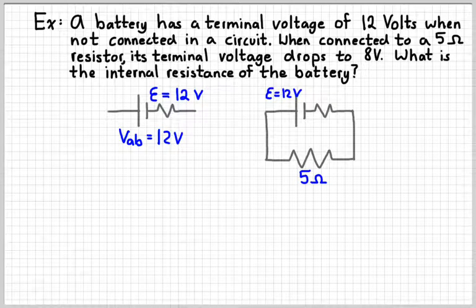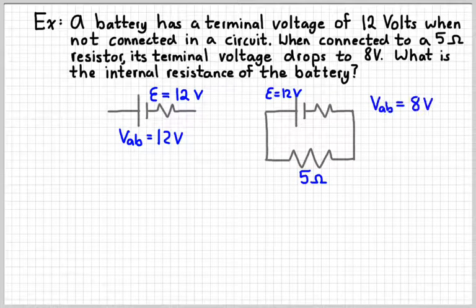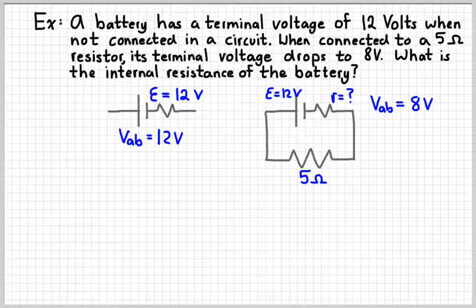And that resistor is 5 ohms. And now we know that the terminal voltage is 8 volts. And little r is our question. And so if we knew one of either the voltage or the current through that thing that we could solve for r. So let's see if we can do that.